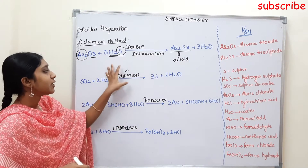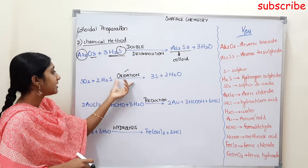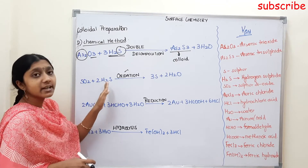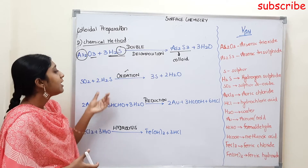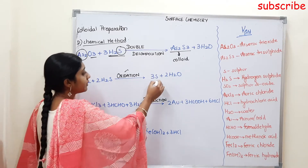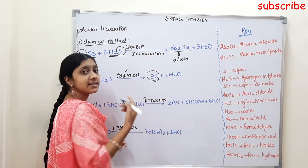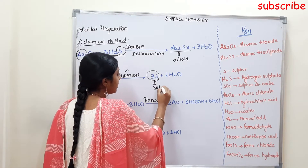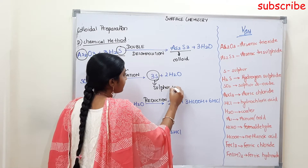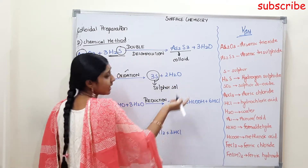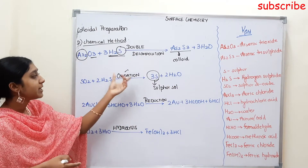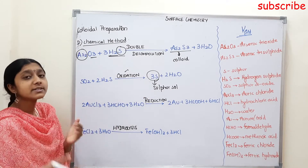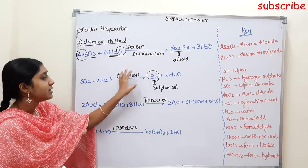The second reaction is an Oxidation reaction. SO2, which is Sulfur Dioxide, reacts with Hydrogen Sulfide. The product is Sulfur and H2O. This process is Oxidation, and it produces a Sulfur colloidal solution. This is the Second Reaction.